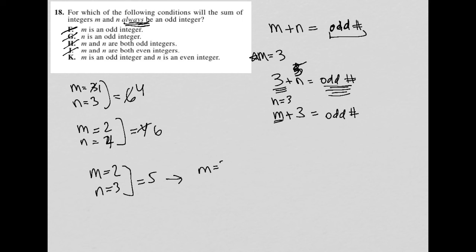Now, if m were 2 and n were 5, we get 7, right? So there's two examples. And if you continue to make examples here, you'd see that this is the scenario that makes it always work. Therefore, choice K is the correct answer.